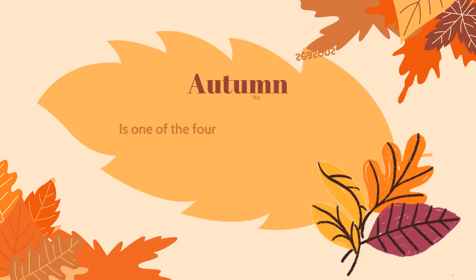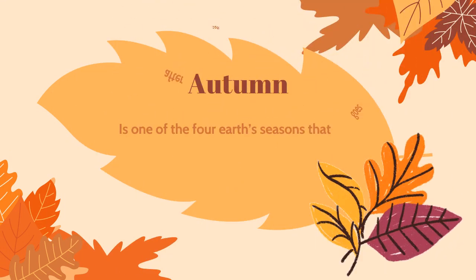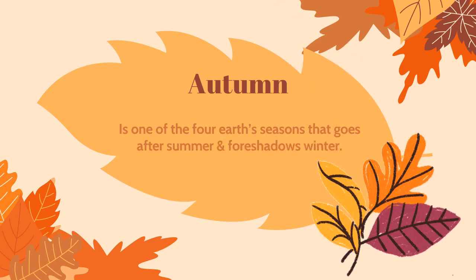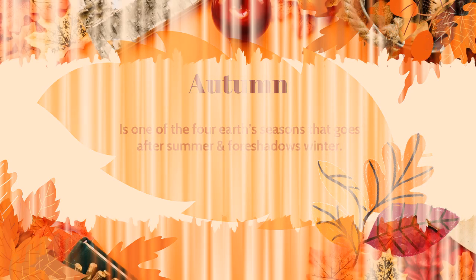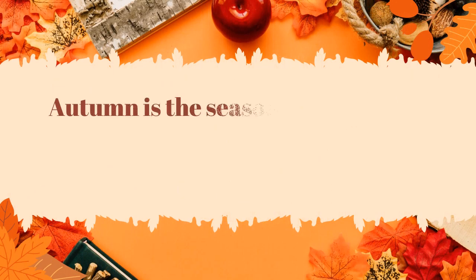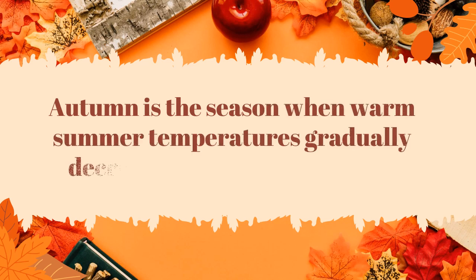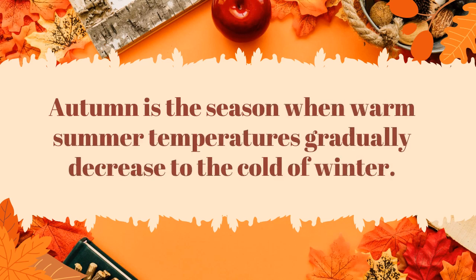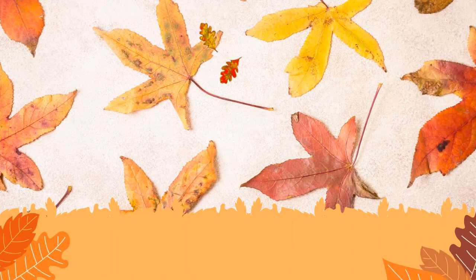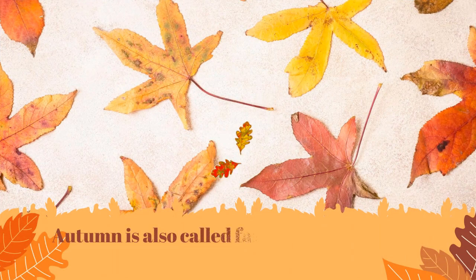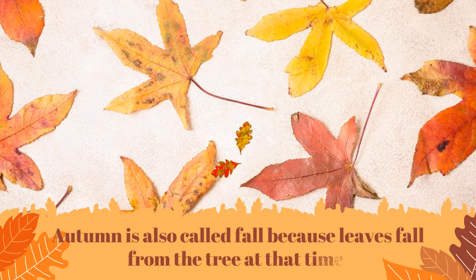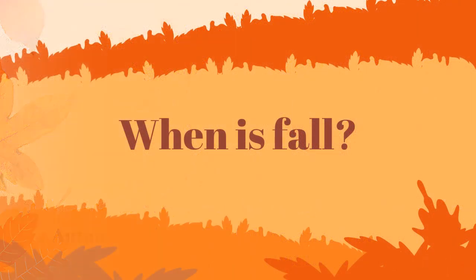Autumn is one of the four seasons of planet Earth that comes after summer and before winter. This is the season when warm summer temperatures gradually decrease to the cold of winter. In some countries like the US, autumn is also called fall because leaves fall from the trees at that time. When does fall begin?